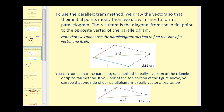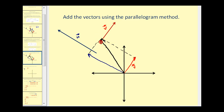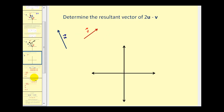If you look at the top portion of the figure, you can see that one side of the parallelogram is really vector B translated. Let's add these vectors using the parallelogram method. We'll place both initial points at the origin, form a parallelogram, and the diagonal of this parallelogram is the resultant. So this vector here is vector V plus vector U.